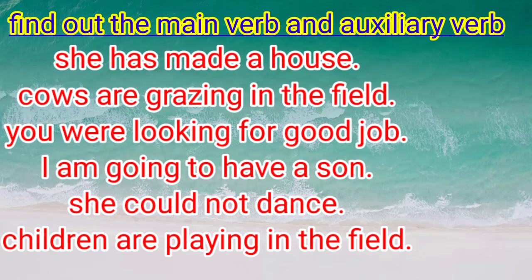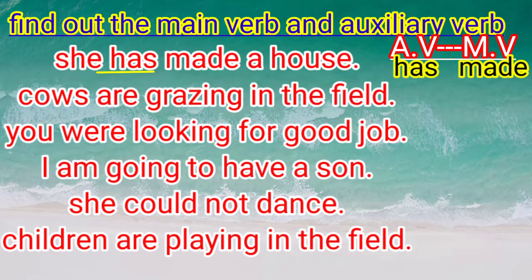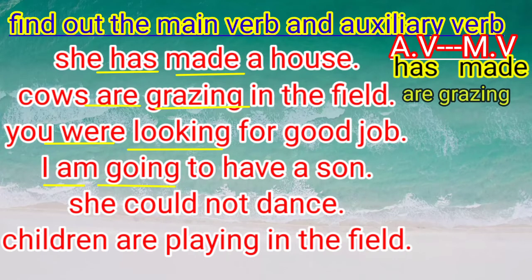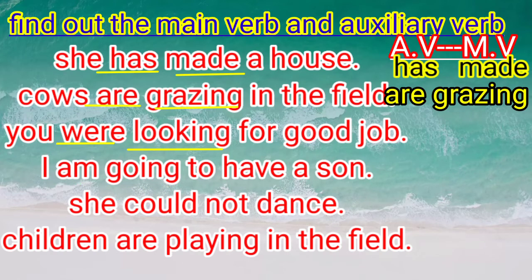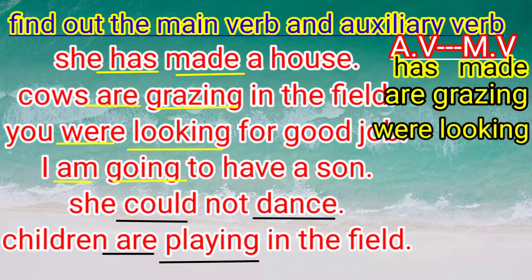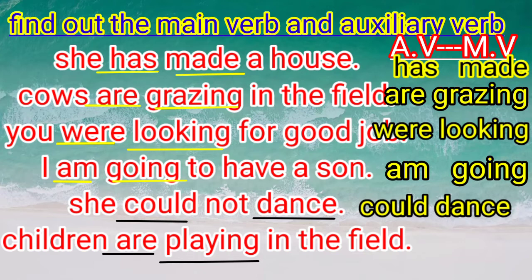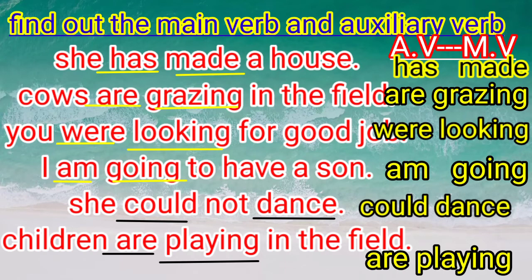Answers: 'She has made a house' — has is the auxiliary verb, made is the main verb. 'Cows are grazing' — are is the auxiliary verb, grazing is the main verb. 'You were looking' — were is the auxiliary verb, looking is the main verb. 'I am going' — am is the auxiliary verb, going is the main verb. 'She could not dance' — could is the auxiliary verb, dance is the main verb. 'Children are playing' — are is the auxiliary verb, playing is the main verb.